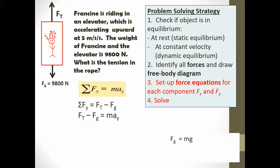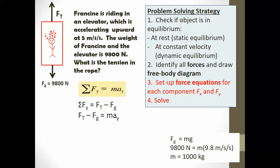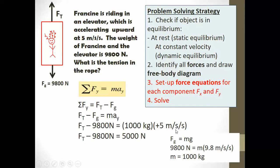We know the force of gravity is 9,800 newtons, but we don't know the mass. To find it, we use the relationship force of gravity equals mass times gravity: 9,800 = m × 9.8, giving a mass of 1,000 kilograms. Plugging in: force of tension minus 9,800 equals 1,000 × 5. Solving, the force of tension is 14,800 newtons.